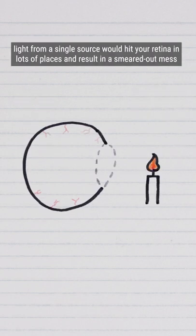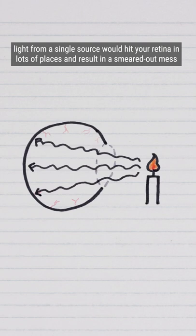If your eye had no lens, light from a single source would hit your retina in lots of places and result in a smeared-out mess, which is exactly what happens when I take the lens off of my camera.